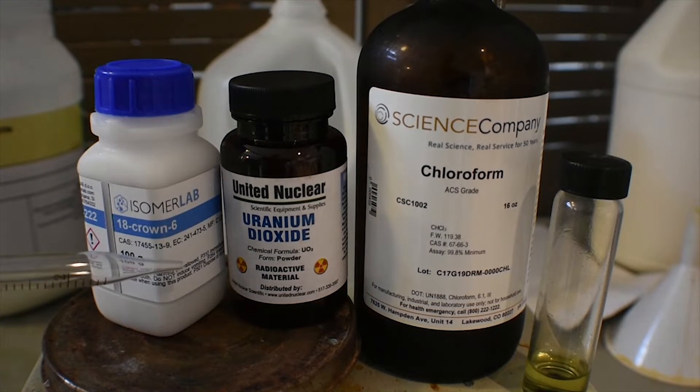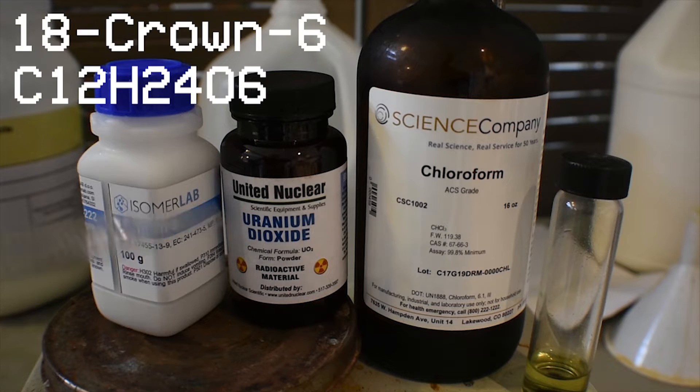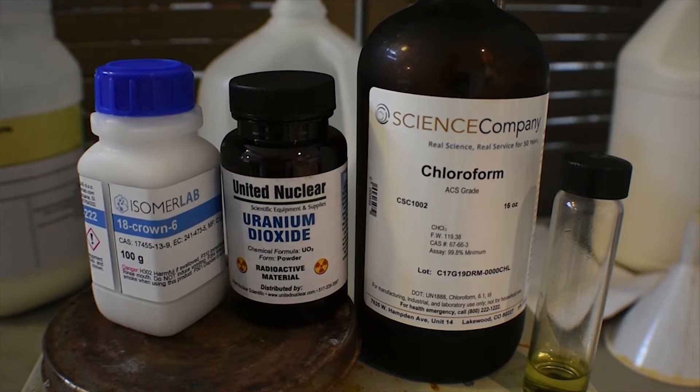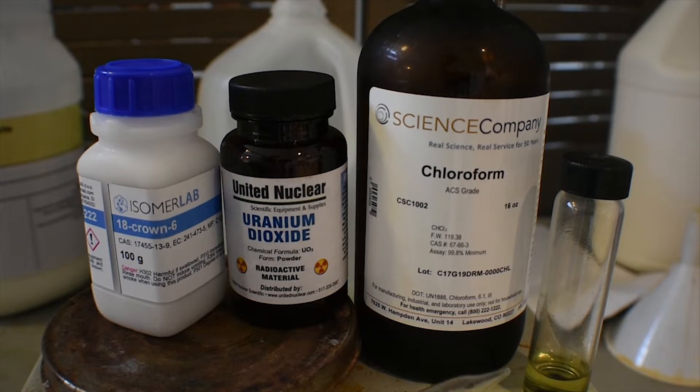Now you may be looking at this bottle on the left here. This is 18-crown-6. 18-crown-6 is a cyclic ether. Today we're going to be binding it with uranium-6 in the form of urinal nitrate.